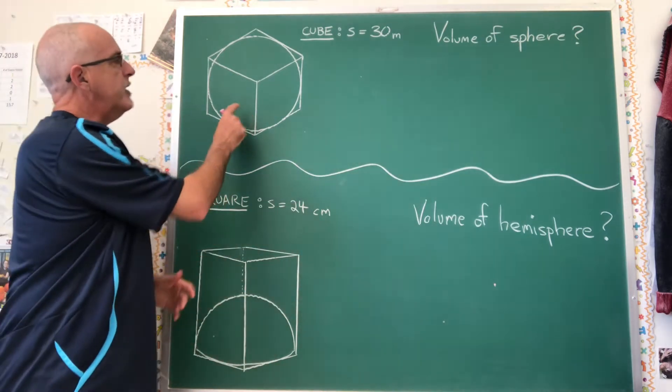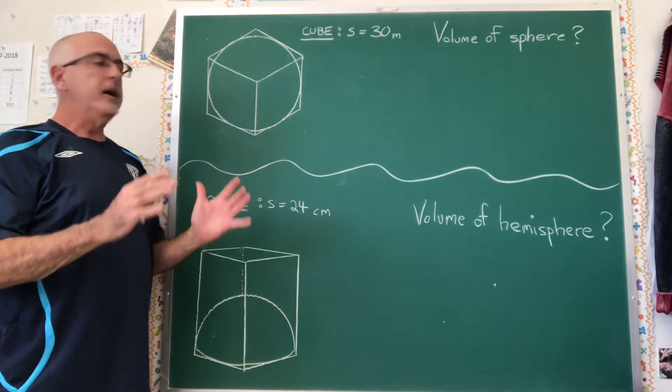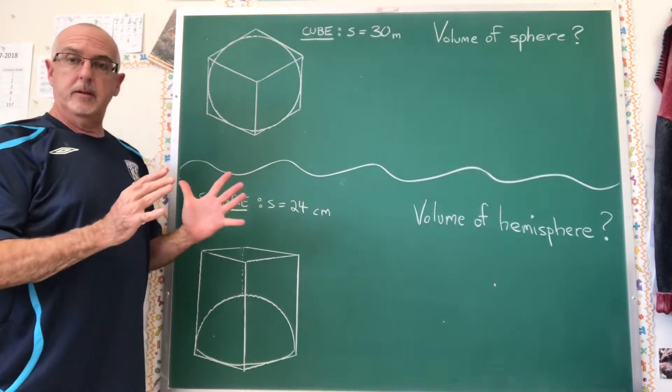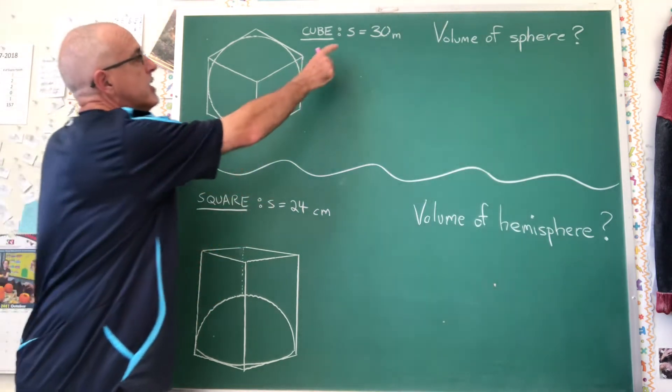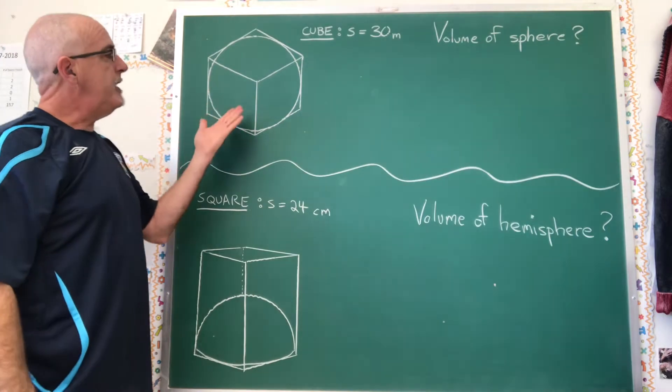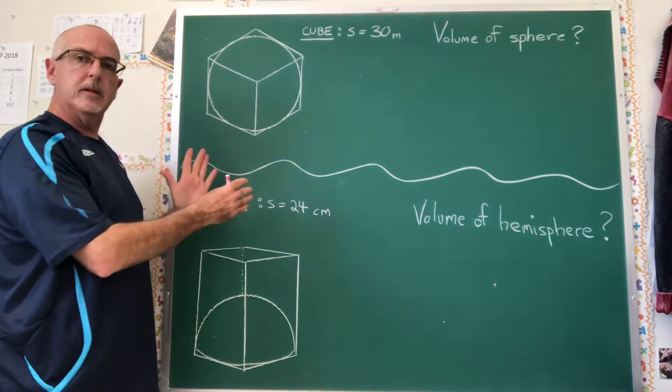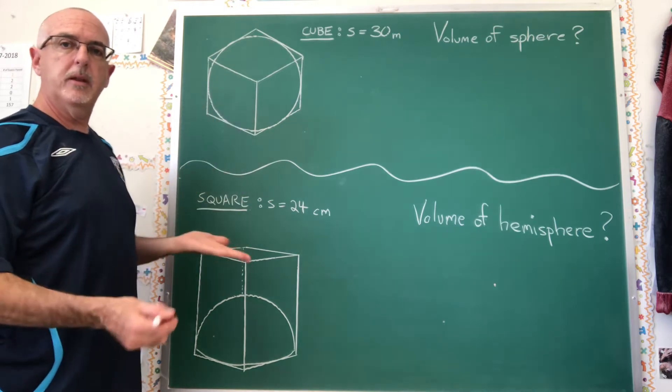Here we have a sphere that is inscribed inside a cube, so it is fitting inside a cube just big enough for the sphere to fit, and the side length of that cube is 30 meters. So if the sphere just barely fits inside this cube, then that means the diameter of the sphere must also be 30 meters.